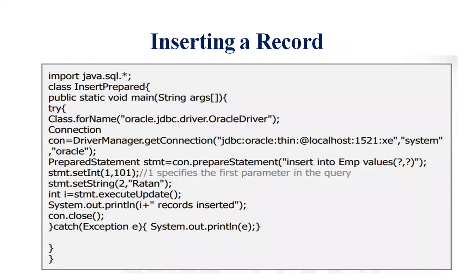Inserting a record: first, we import the package — import java.sql.*. The class is InsertPrepared with public static void main(String[] args). We load the driver class using Class.forName with oracle.jdbc.driver.OracleDriver to set the driver path. Then we get the connection using DriverManager.getConnection with the JDBC URL: jdbc:oracle:thin:@localhost:1521:xe — where 1521 is the port number, xe is the database name, system is the username, and oracle is the password.